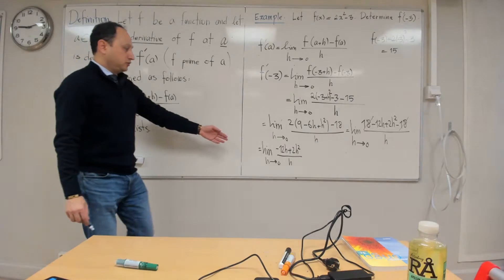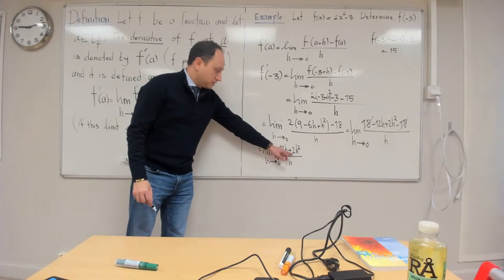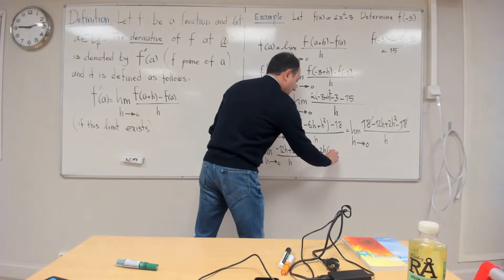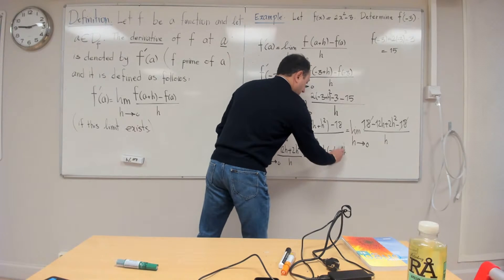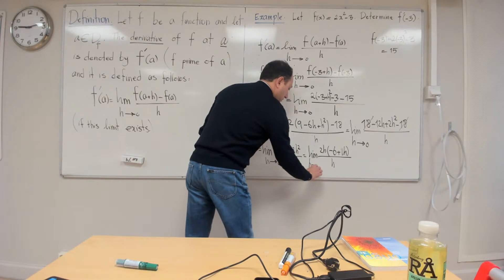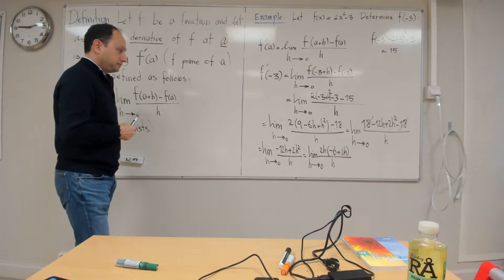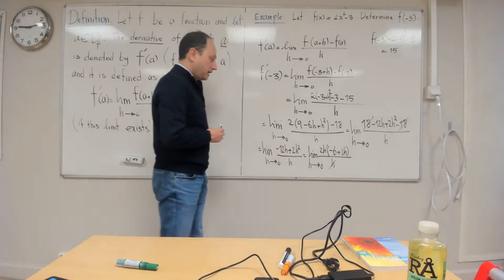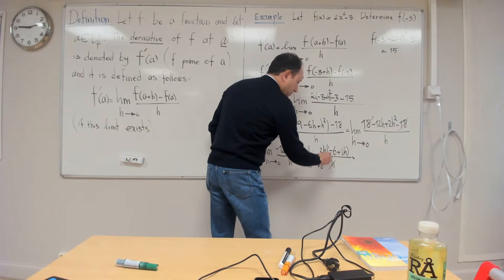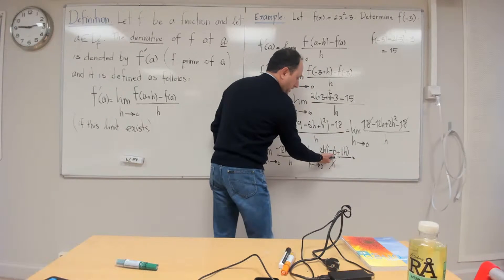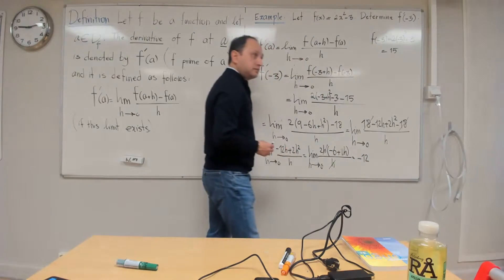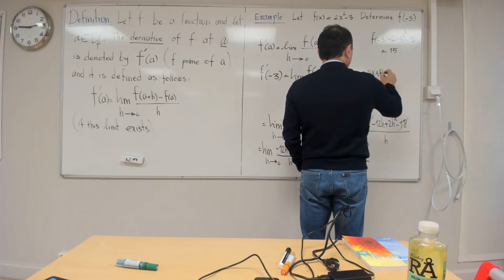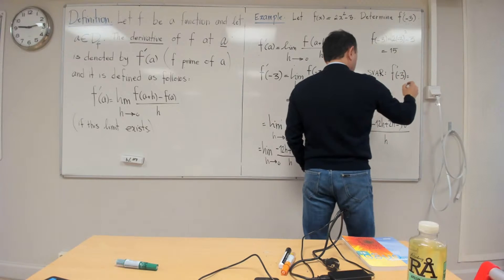I need to simplify. The exponent has priority over the product — raise it to power 2 first: it becomes 9 minus 6h plus h squared. Then multiply by 2: 18 minus 12h plus 2h squared, then minus 3, minus 15. This 18 and that 18 cancel. What is left is minus 12h plus 2h squared, divided by h, as h goes to 0. I can factor out h: limit of h times (minus 12 plus 2h) divided by h. The h cancels, so I plug in h equal to 0: minus 12 plus 0, which is minus 12.